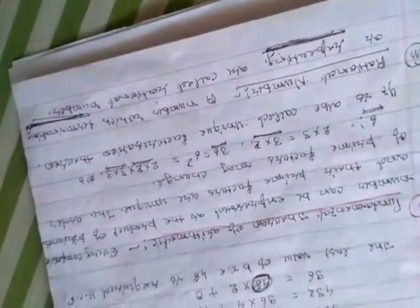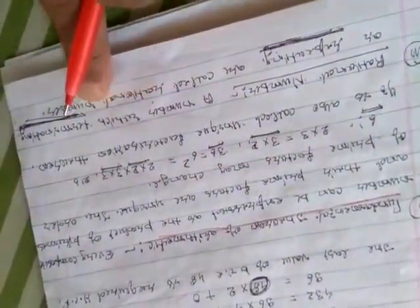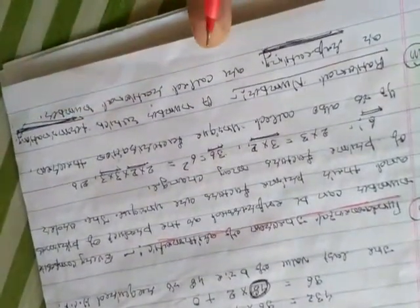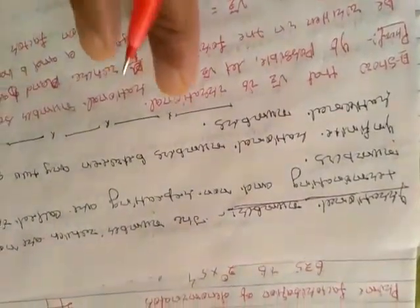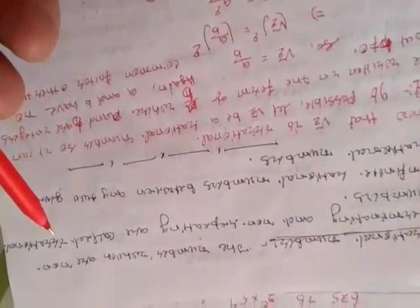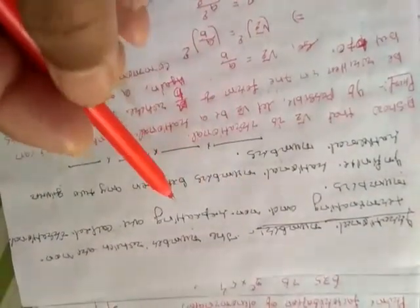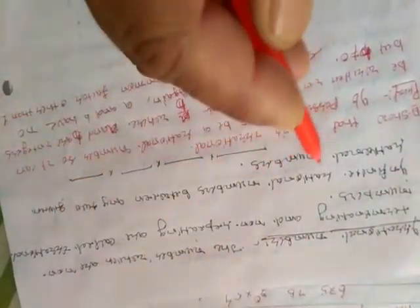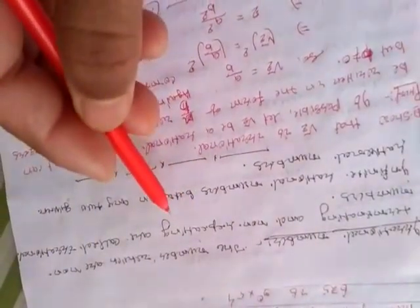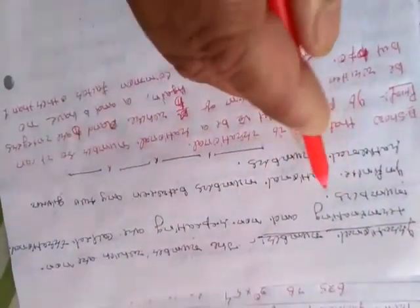Now coming to rational numbers. A number which is terminating or repeating is called a rational number, or it may also be expressed in the form of p by q, where p and q are integers but q is not equal to 0. Thereafter, irrational numbers: the numbers which are non-terminating and non-repeating are called irrational numbers.